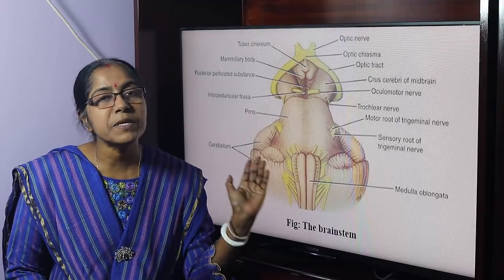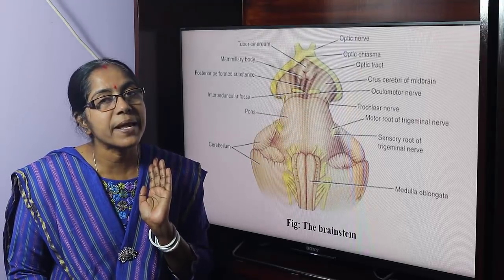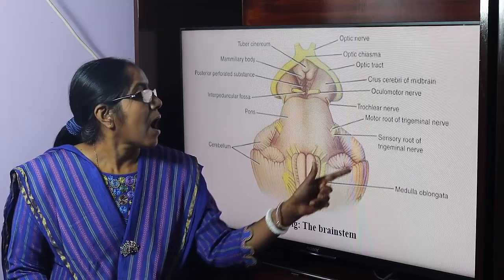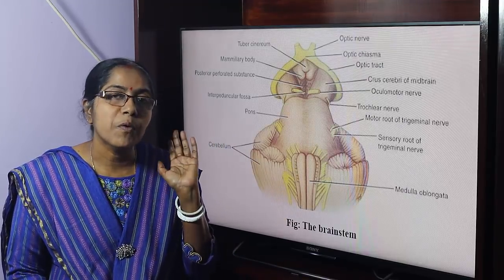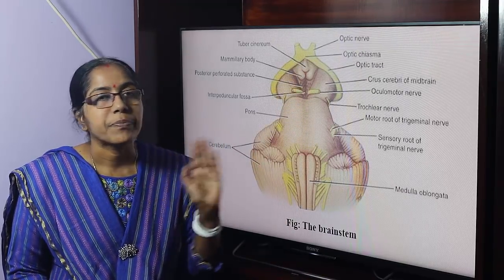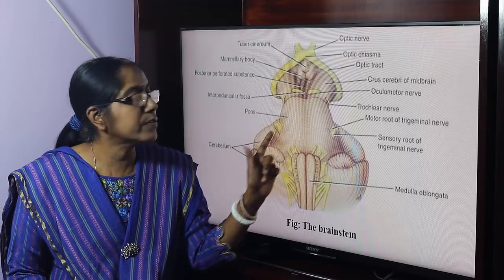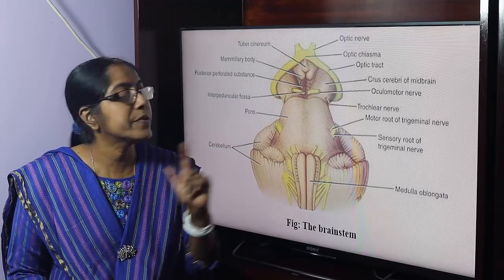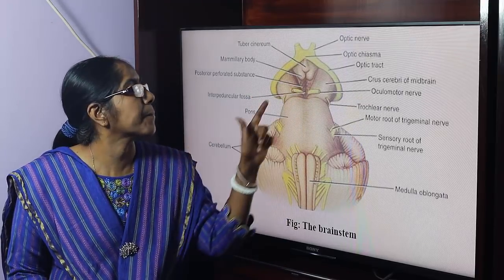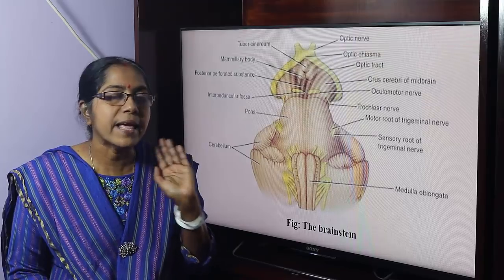What is the midbrain? It is the smallest part of the brain stem which connects the hindbrain with the forebrain. The brain stem is composed of midbrain, pons, and medulla. The midbrain is about 2cm in length.